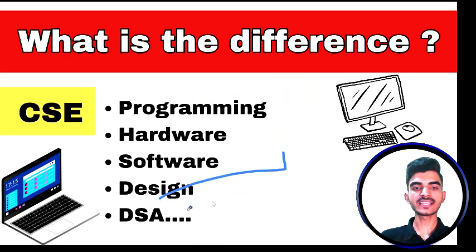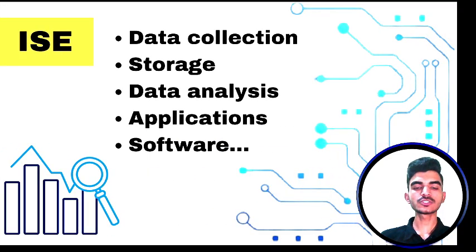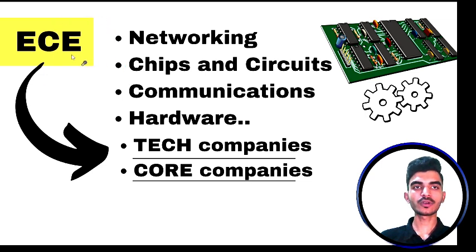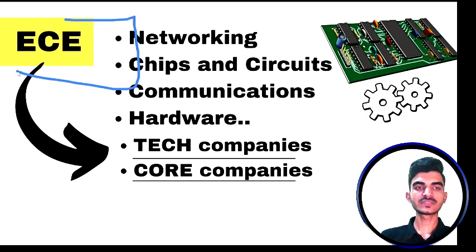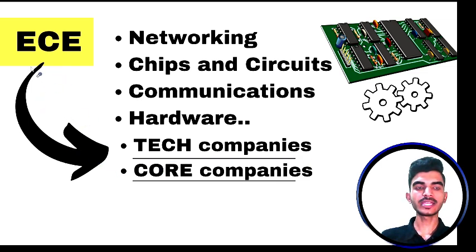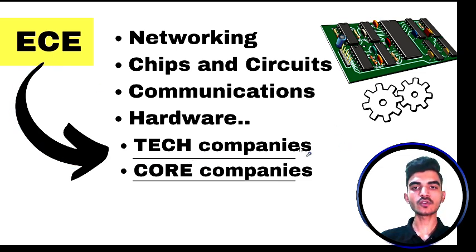In computer science, you will have subjects of both hardware and software, so it is an all-round type. That is why most students prefer computer science — it opens a wide range of options in your future. There are many examples where electronics students also get jobs in tech companies. This is possible when you learn programming on your own, do certifications in programming, and learn the coding part. You can easily go into tech companies as well as core companies, since your main branch is electronics.